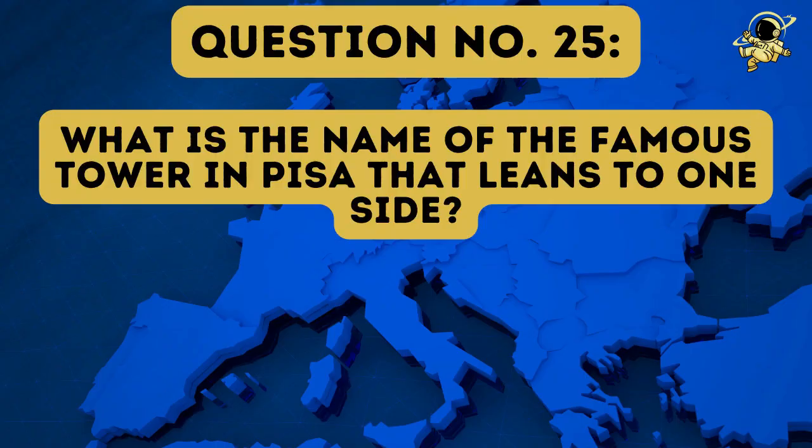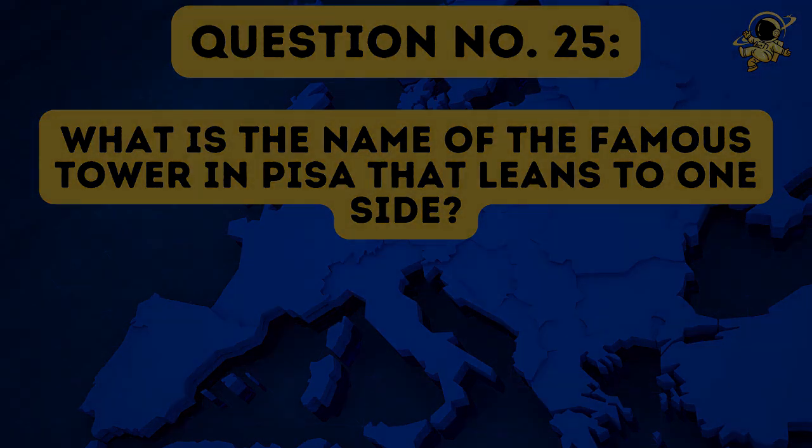And then we come to question number twenty-five: What is the name of the famous tower in Pisa that leans to one side? That's quite an easy one. The answer to question number twenty-five is the Leaning Tower of Pisa. Now you already managed to go through a quarter of the questions. I hope that you scored a lot of points. But let's continue.